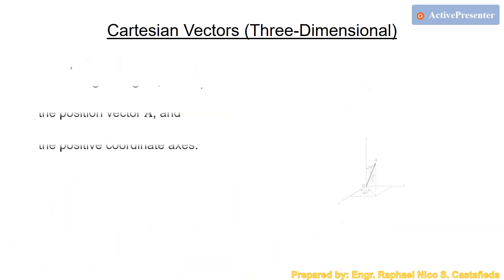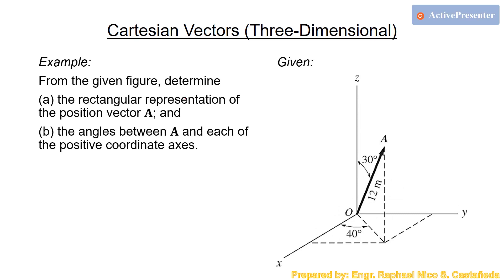Let's have an example on the same topic of azimuth angle and transverse angle. Take a pause and try to solve it on your own first, then play it back, check if you have the same answer, and identify which parts of your solution are correct or need improvement. For the given figure, vector A has a magnitude of 12 meters. This is the azimuth angle and this is the transverse angle. Determine the rectangular representation of vector A.